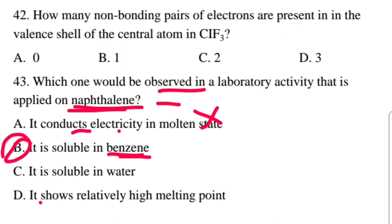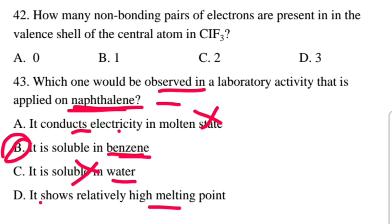Naphthalene is non-polar and benzene is non-polar, confirming B. Water is polar, naphthalene is non-polar, so naphthalene is not soluble in water. Option D — it shows a relatively high melting point — is not applicable for a non-polar molecular compound.